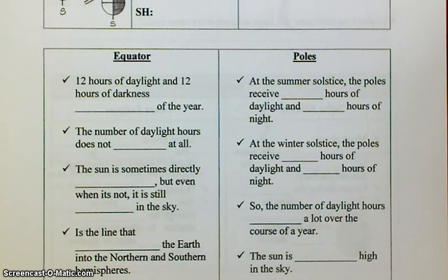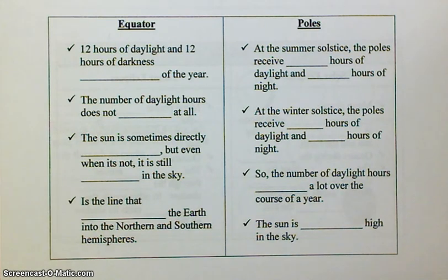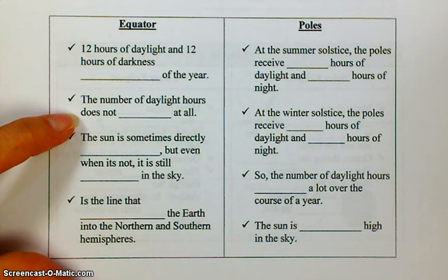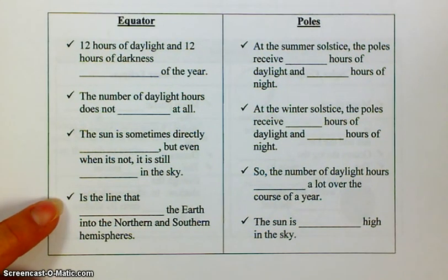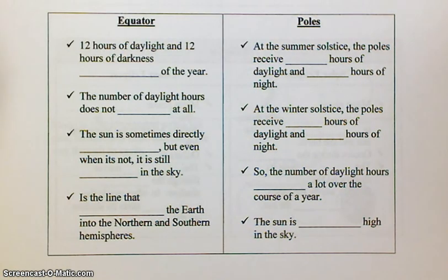Now let's look at equator versus the poles. At the equator, you have 12 hours of daylight and 12 hours of darkness every day of the year. The number of daylight hours does not vary or change at all. The sun is sometimes directly overhead, but even when it's not, it is still high in the sky. The equator is the line that separates the Earth into northern and southern hemispheres. At the summer solstice, the poles receive 24 hours of daylight and zero hours of night.